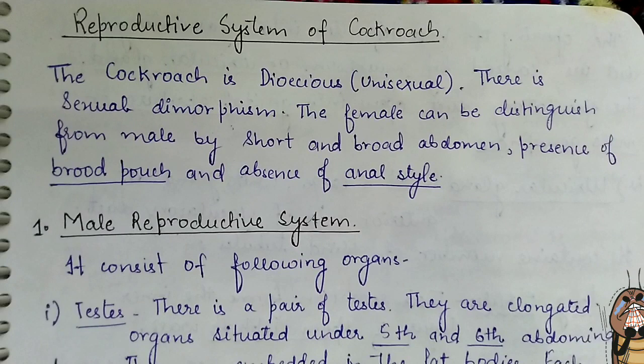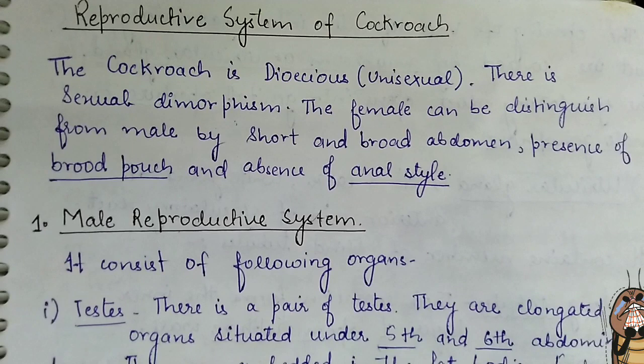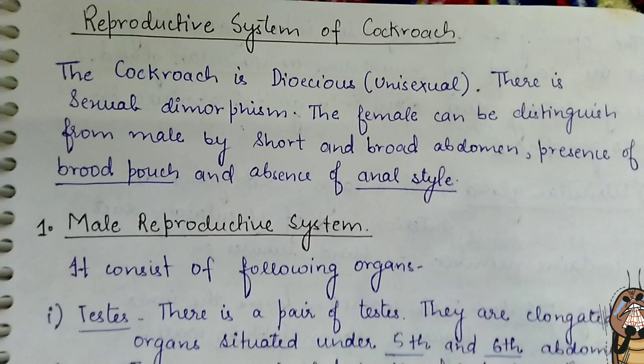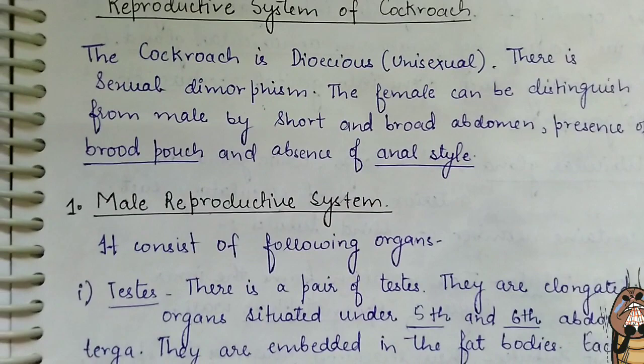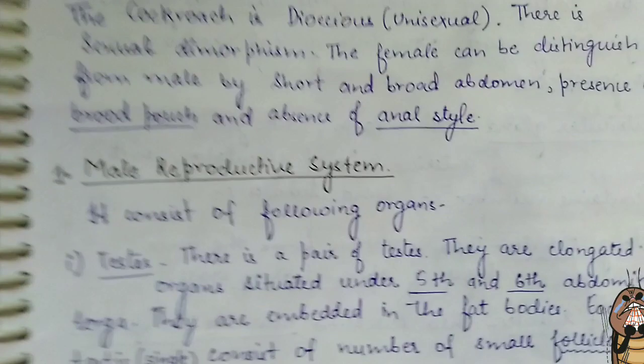The female cockroach can be distinguished from the male cockroach by its short and broad abdomen, the presence of a brood pouch, and the absence of anal style. The female cockroach will be short and broad, and the anal style will be absent.